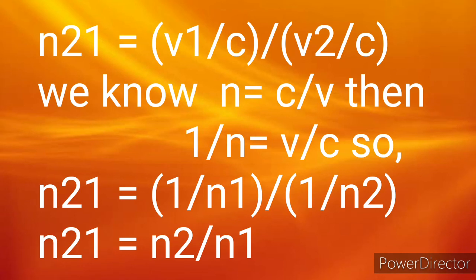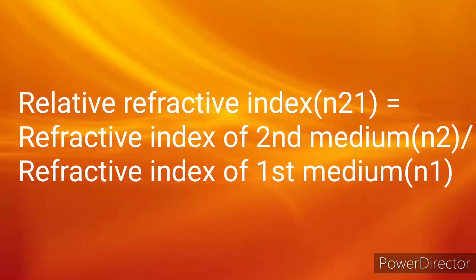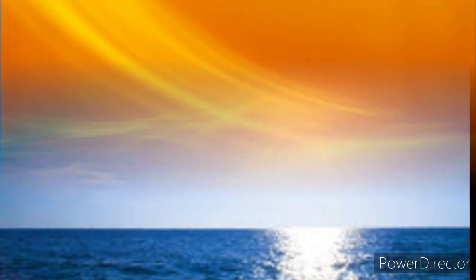Finally, we get n₂₁ = n₂/n₁. The refractive index of a medium with respect to another medium is defined as the relative refractive index. So the relative refractive index n₂₁ equals the refractive index of the second medium divided by the refractive index of the first medium.